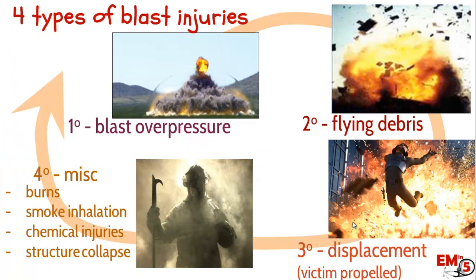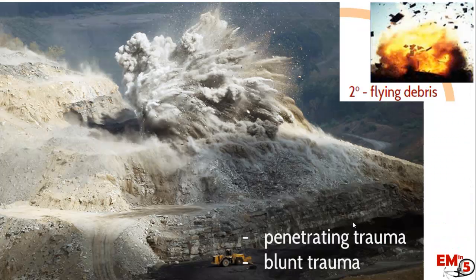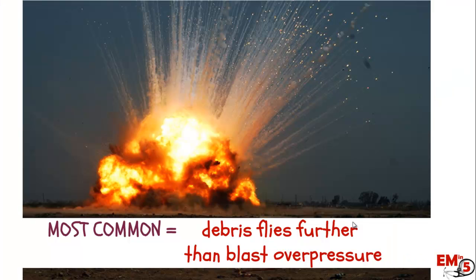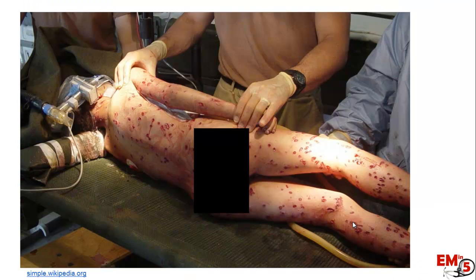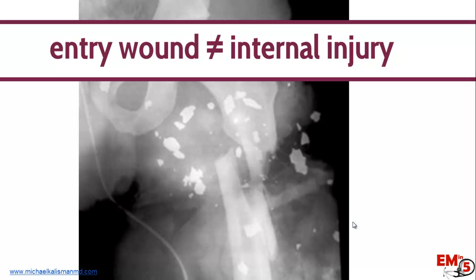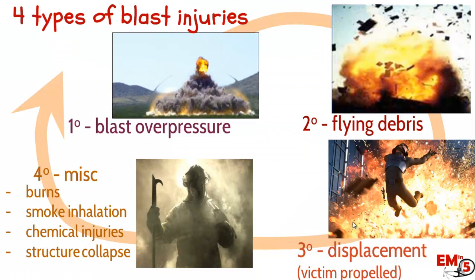Next is secondary injury, which is from flying debris. This causes a lot of penetrating trauma and also some blunt trauma, and it's actually the most common injury. That's because the debris flies further than the shock wave. This is where you're going to see a lot of shrapnel-type injuries. One thing to remember: even if you have a small entry wound that doesn't look like a big deal, in a blast injury you really need to have high suspicion that there could still be extensive internal injury from these wounds.